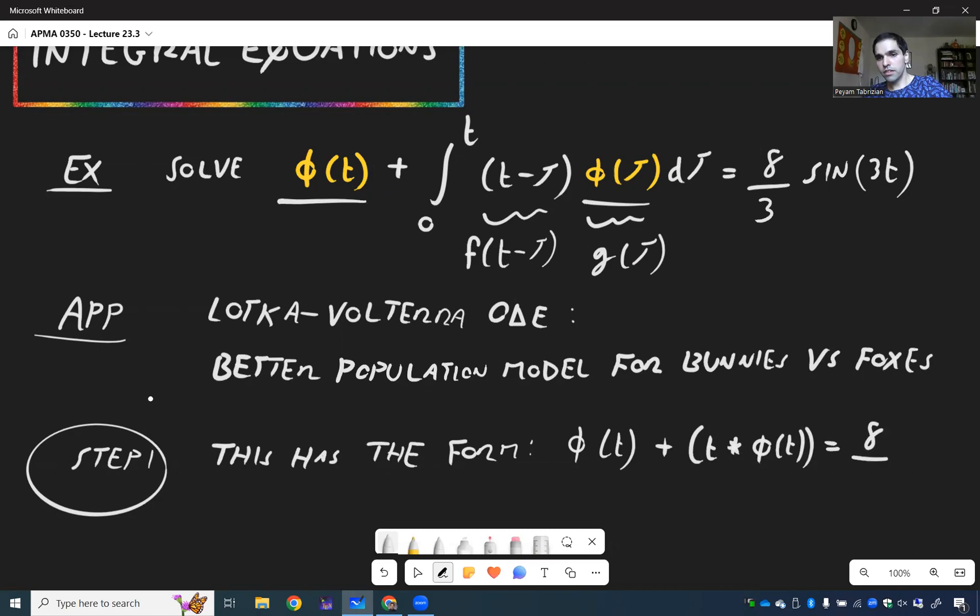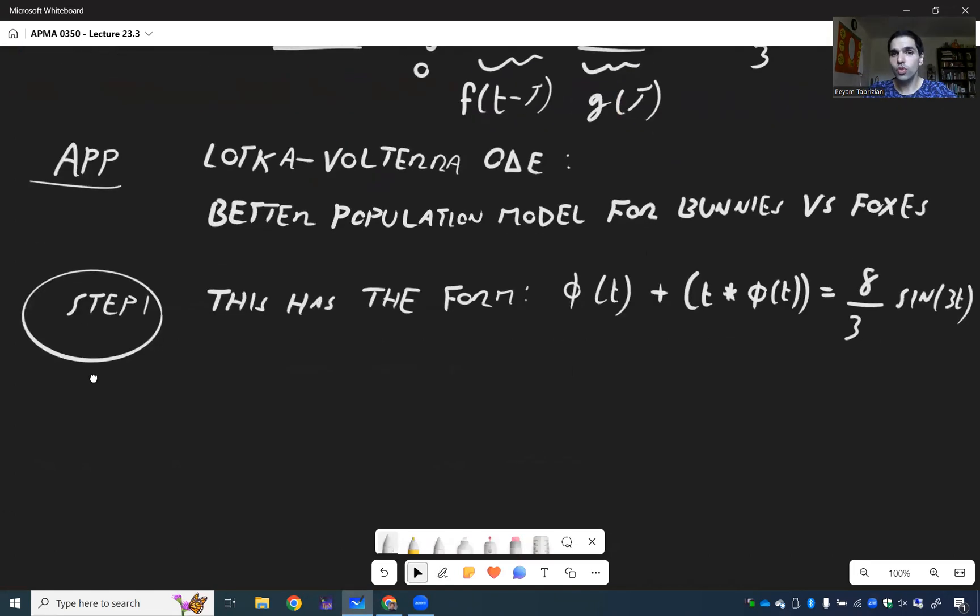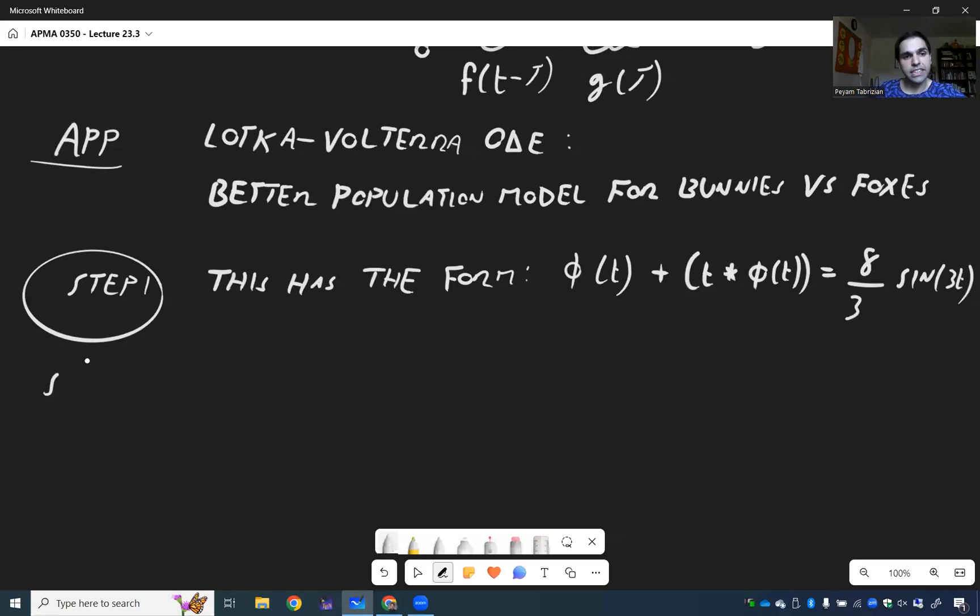φ(t) = 8/3 sin(3t). And once you notice that, then the rest is just as usual. Because again, take the Laplace transform.